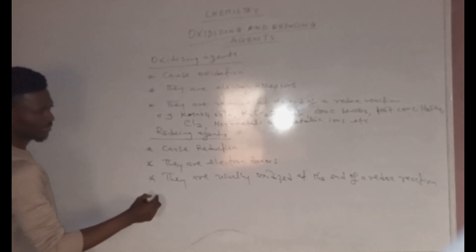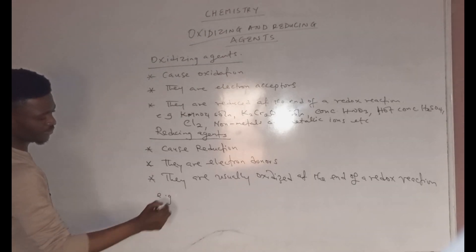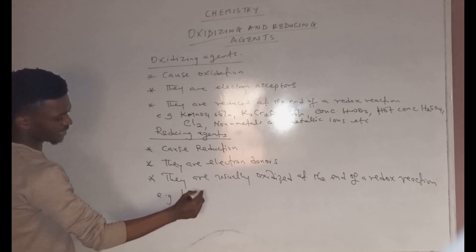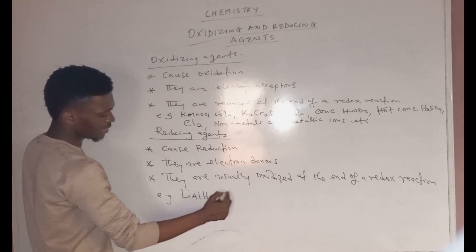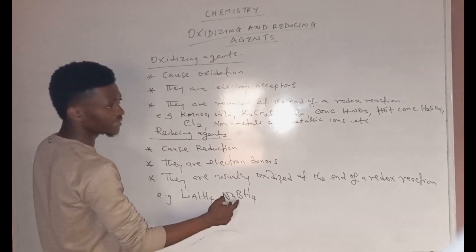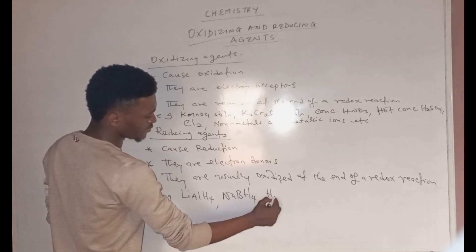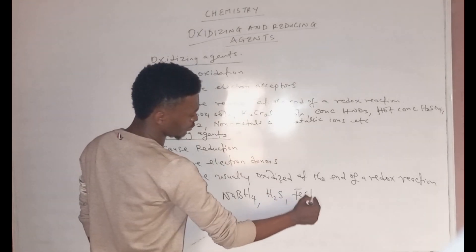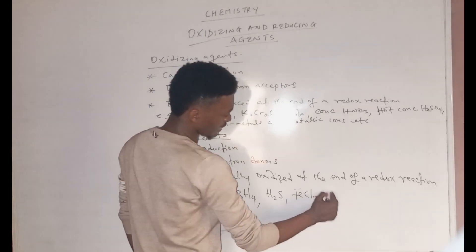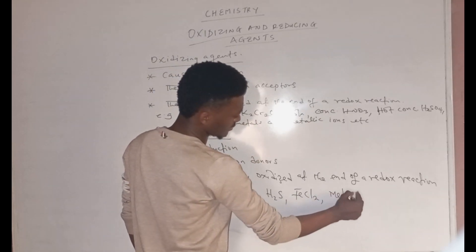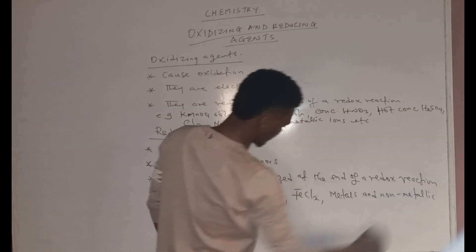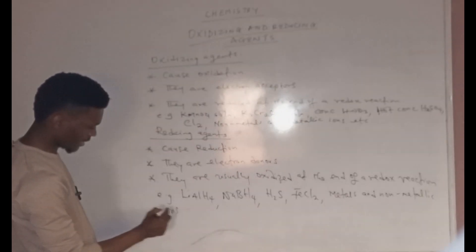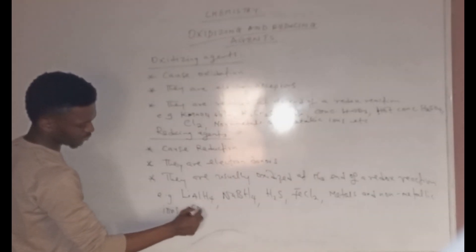In the case of reducing agents, classical examples include complex hydrides such as lithium tetrahydridoaluminate and sodium tetrahydroborate. We also have hydrogen sulfide, iron(II) chloride solution, metals, and non-metallic ions — these also function as reducing agents.